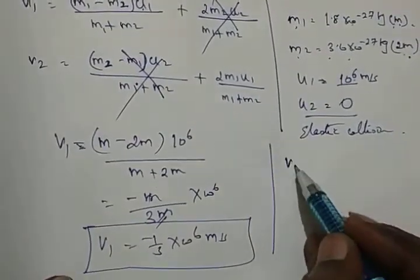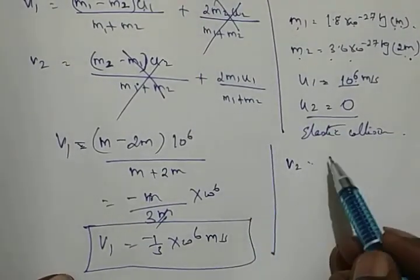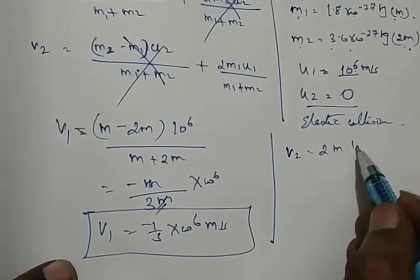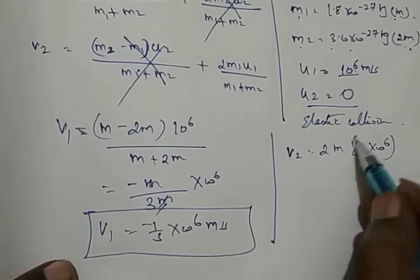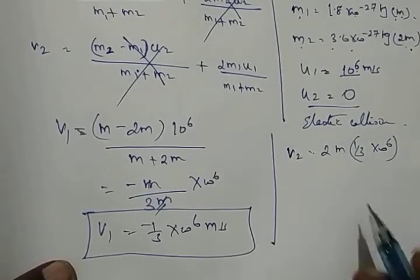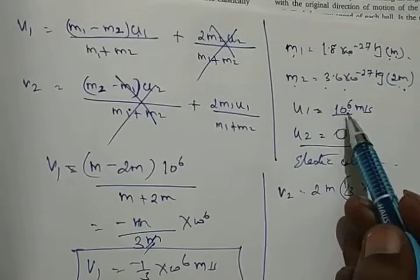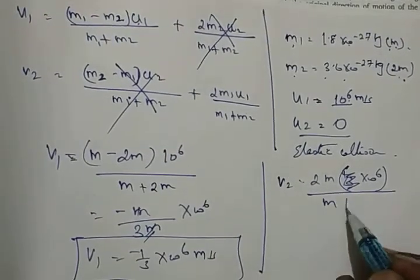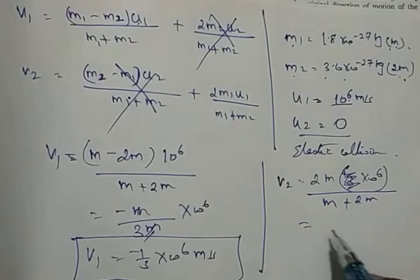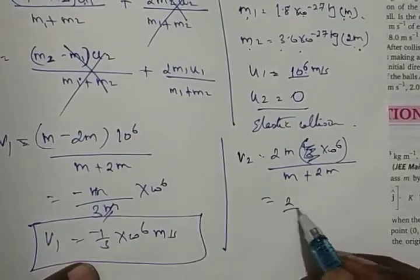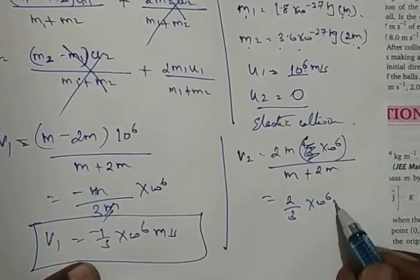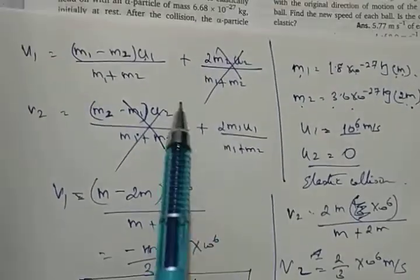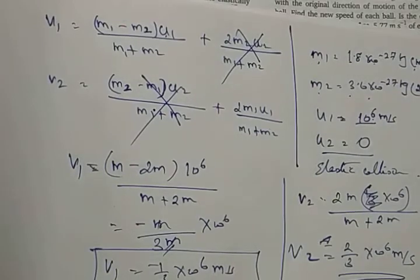Similarly, V2 = 2M·U1 / (M + 2M) = 2M·10⁶ / 3M = (2/3)×10⁶ m/s. The whole solution becomes very simple once you know and apply the elastic collision formula directly.